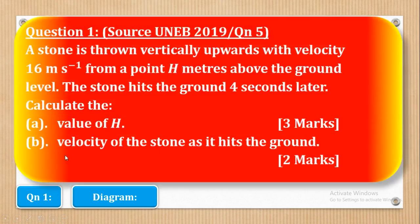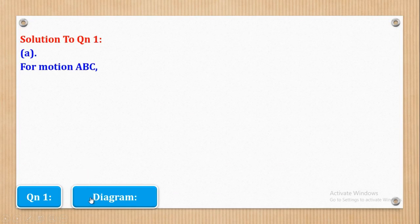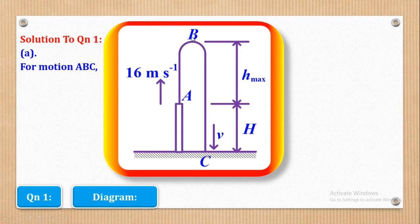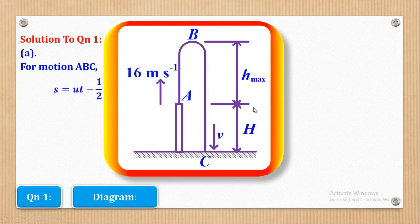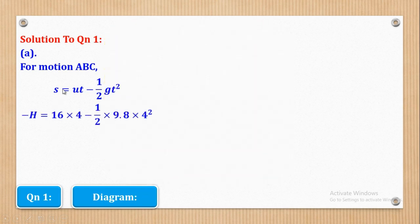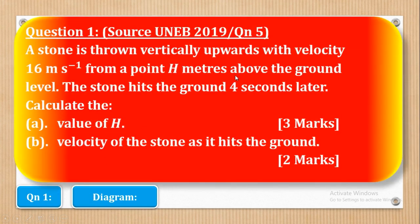After knowing the sketch, we shall answer the question — first calculate the value of H. For motion A to C, we use the second equation of motion: S = UT − ½gT². The displacement is negative H because H is below the point of projection. U is 16, T is 4 seconds as given, and G is 9.8. Substituting these values, we have only one unknown which is H, and solving gives H equal to 14.4 meters.